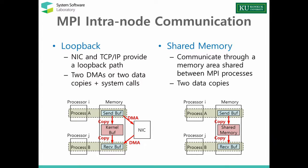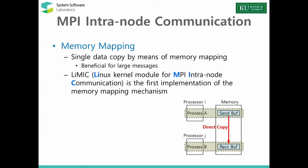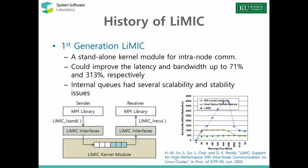To reduce the number of data copies, a memory mapping-based scheme has been suggested. In this scheme, the destination process can map the source buffer to its virtual address space so it can directly access the source buffer, reducing the number of data copies to one. However, this memory mapping overhead is relatively large compared with the overhead of memory copy for small messages. So many current MPI implementations use shared memory for small messages, and the memory mapping scheme is used for large messages. LIMIC is the first implementation of the memory mapping mechanism.